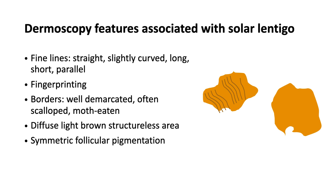The dermoscopic features associated with solar lentigo include: fine lines, which could be straight, slightly curved, long, short, or parallel — the metaphoric term for this is fingerprinting. The borders are usually well demarcated, often scalloped or moth-eaten. We also have diffuse light brown structureless areas and symmetric follicular pigmentation.